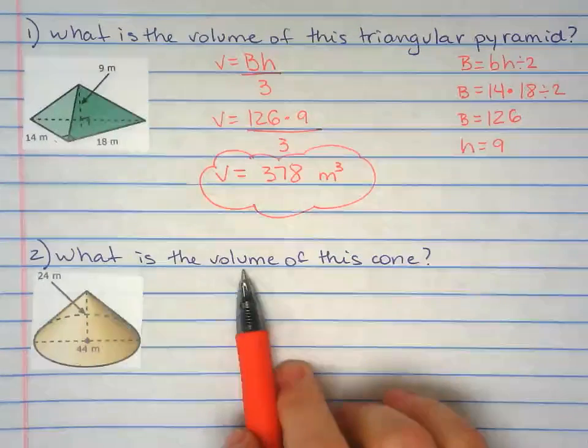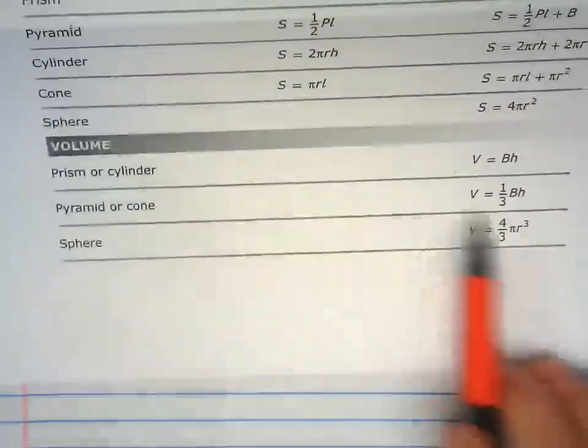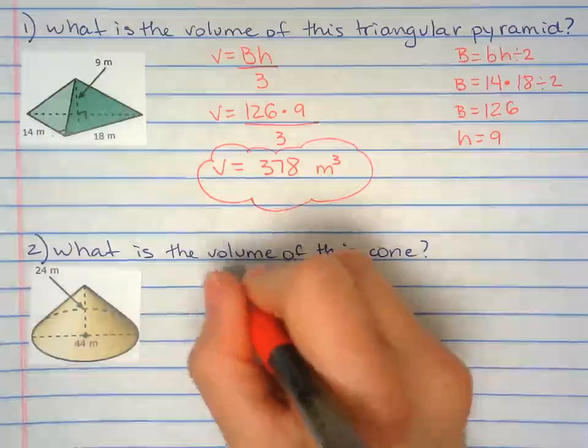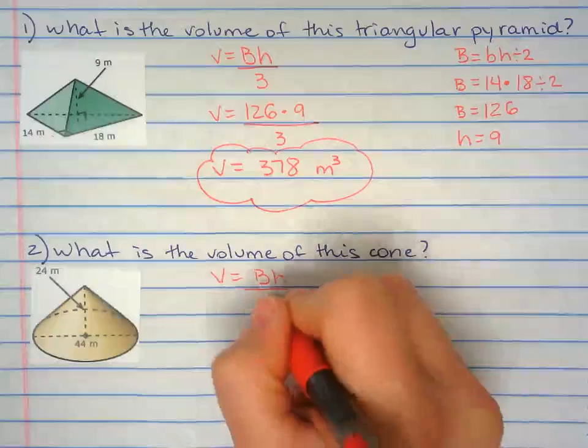Finding the volume of a cone. If you notice the pyramid and the cone, they have the same formula. So copy the formula down. Area of the base times height divided by three.